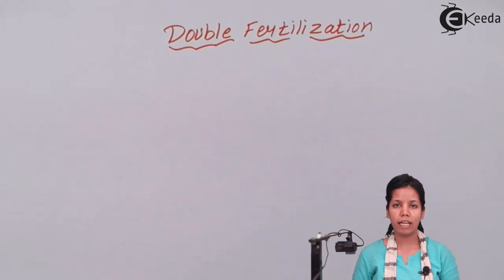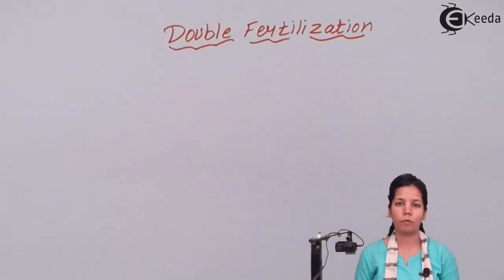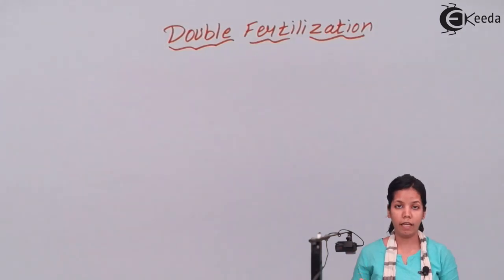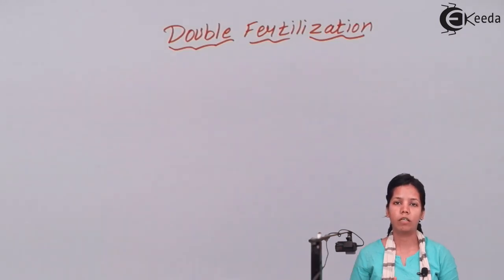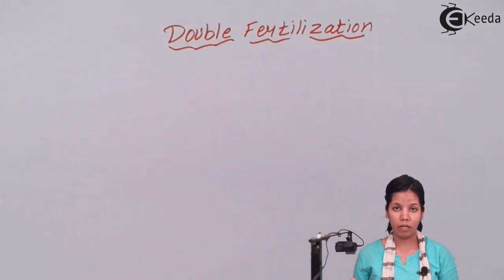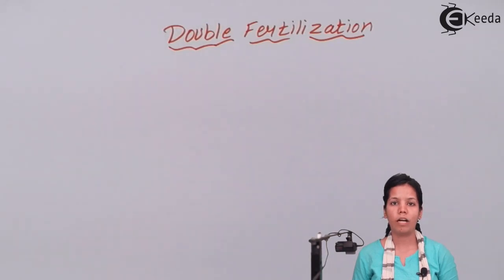Whenever you take a seed and remove the seed coat, that is the primary endosperm. So during double fertilization, one male gamete fuses with the egg and another male gamete fuses with the polar nucleus. Since two different male gametes fuse — one with the egg, another with the polar nuclei — in the same ovary, this process is called double fertilization.